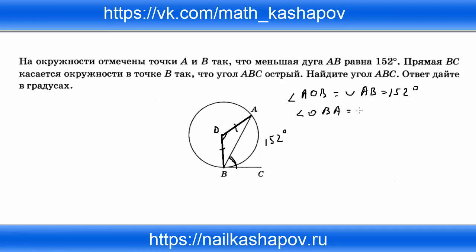Угол OBA равен углу BAO, и он равен: (180 − 152) / 2 = 28 / 2 = 14 градусов. Значит, угол ABO равен 14 градусов.